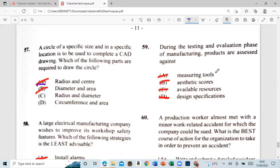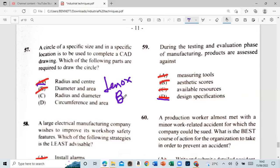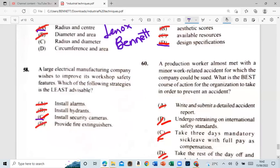59: during the test and evaluation phase of manufacturing, products are assessed against A: measuring tool. That will be a status score. See available resources. The design specifications. And that's the design specifications. Guys, we have made it to the end. That's going to appreciate you all. I wanted this to be a good sitting in here. All the other videos on this topic. Since this was seen. Right. 60. A production worker. A production worker.